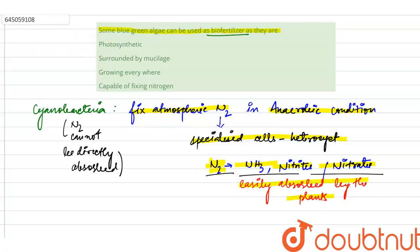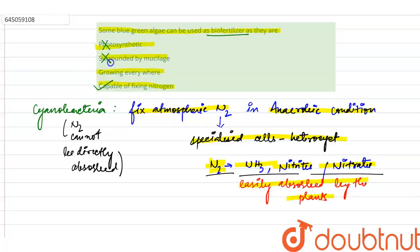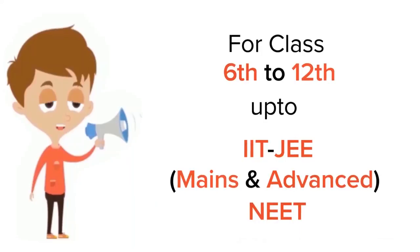Looking at the options: photosynthetic, surrounded by mucilage, growing everywhere, and capable of fixing nitrogen. The correct option is 'capable of fixing nitrogen' — option number four — while the rest of the options are incorrect.